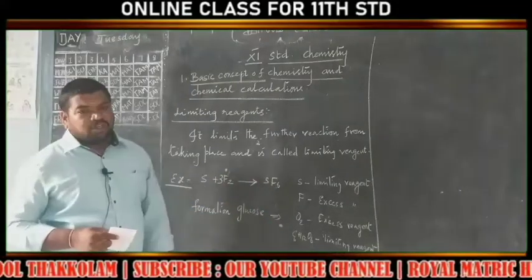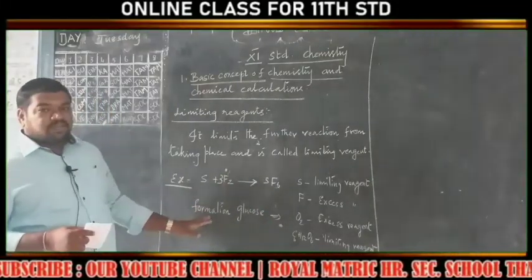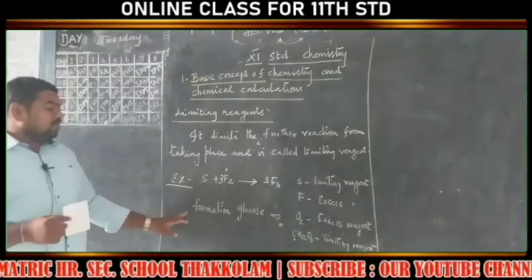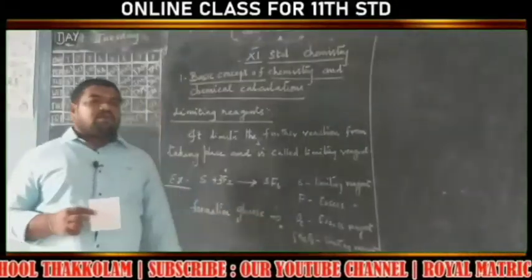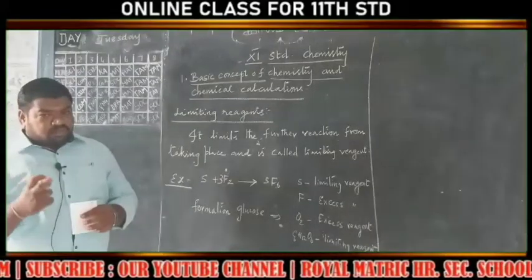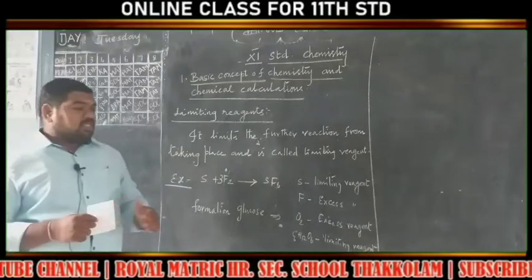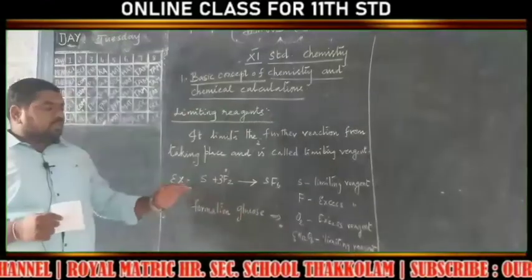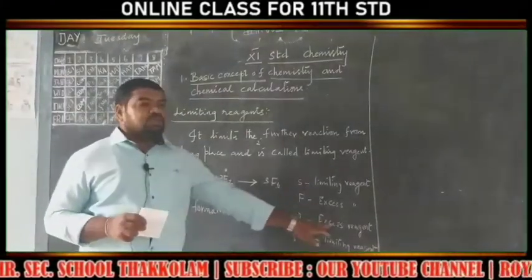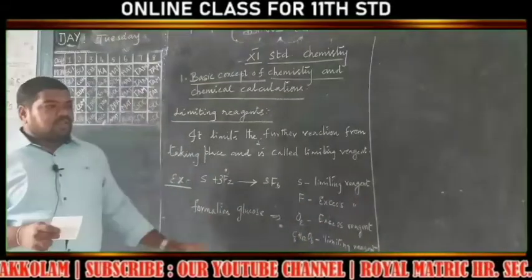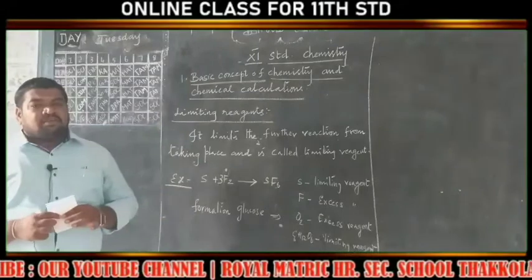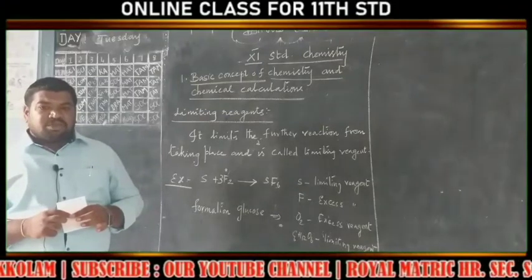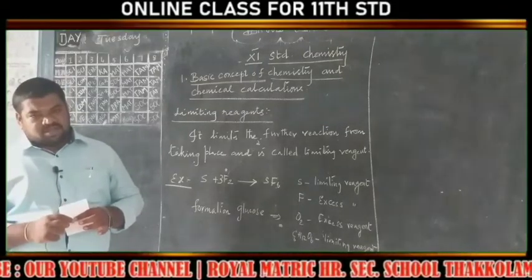One more example: the formation of glucose. In the formation of glucose, six moles of CO2 and six moles of water form one mole of glucose, using six moles of oxygen. So glucose is the product, with the limiting reagent and oxygen as the excess reagent. Based on the limiting and excess reagent, we can calculate the yield of the product in a non-stoichiometric, that means unbalanced, chemical reaction.